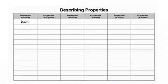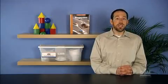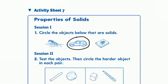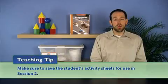Next, post the describing properties chart in the classroom and add student observations to the chart under the heading properties of solids. To conclude Session 1, distribute Activity Sheet 7 to students and have them complete question 1. Make sure to save the students' activity sheets for use in Session 2.